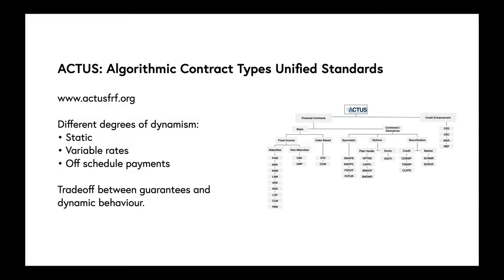These particular types of loan are one of the standard types in the ACTUS algorithmic contract types, which is an attempt to describe in a unified way the different types of financial contracts that exist. The standard looks at different types and embraces different degrees of dynamism. We can have static or variable rates.